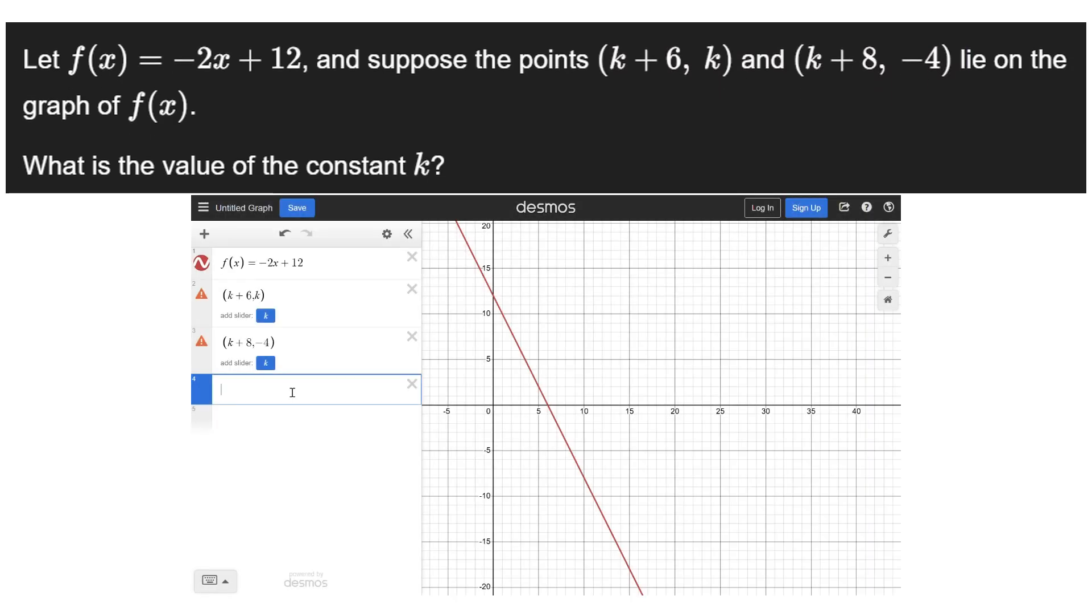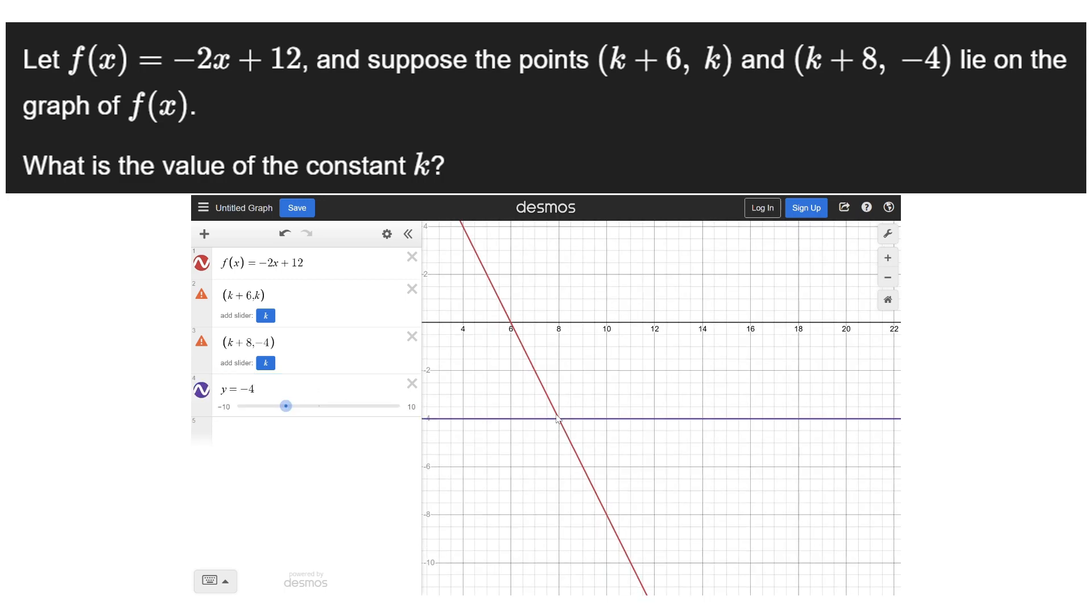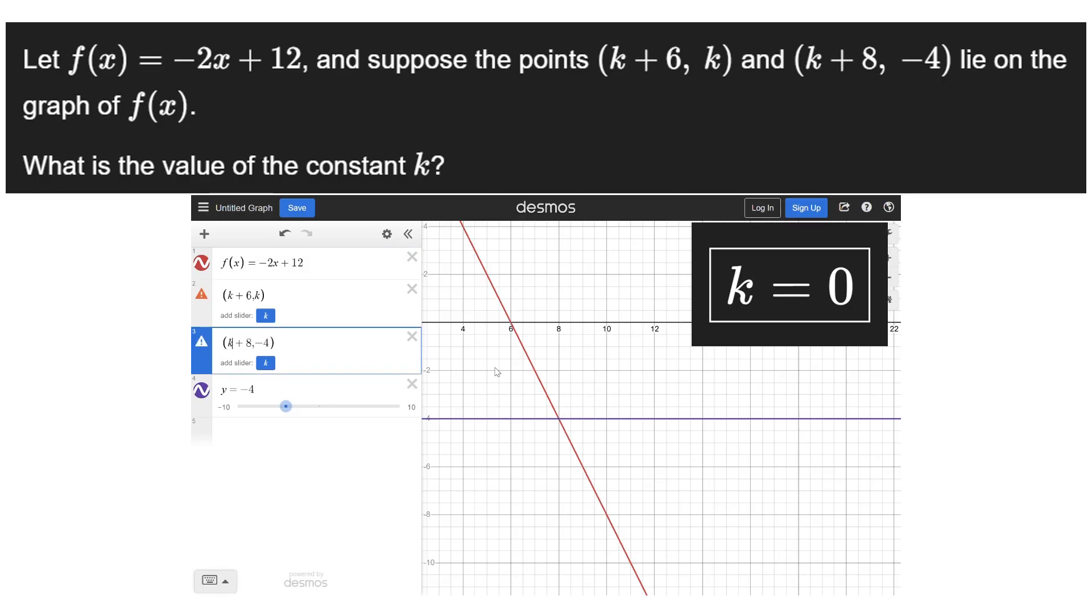So let's pull up Desmos to find the value on the second point. We know y is equal to negative 4, so if we make this line we can find the x value. The value is 8 and if we solve on the original expression we can simply tell that k equals 0.